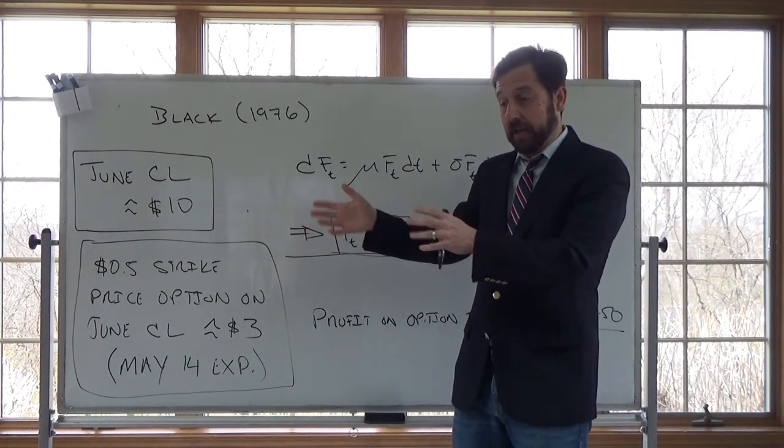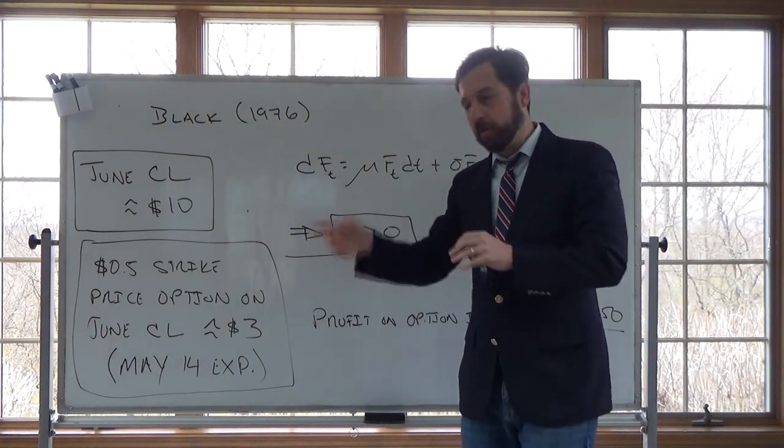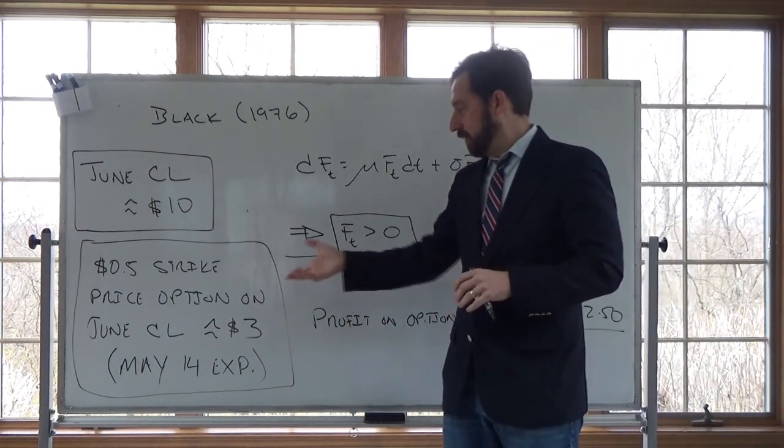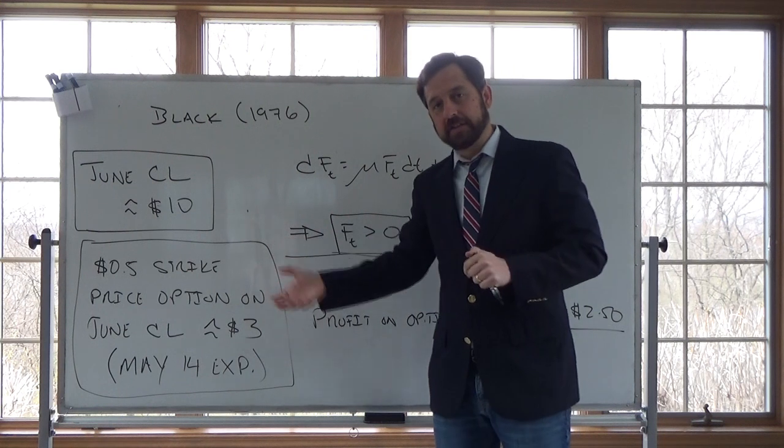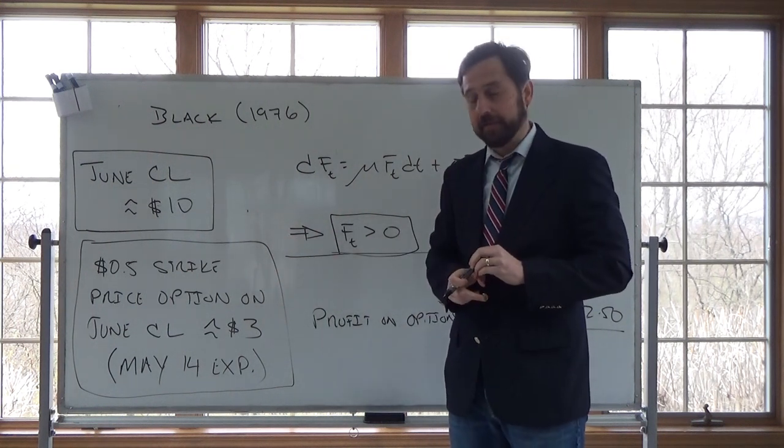What this assumes, what this says however, is that if crude oil falls below negative $2.50, then you would profit on this option. So if you're buying this option, you're expecting crude oil to fall below negative $2.50.